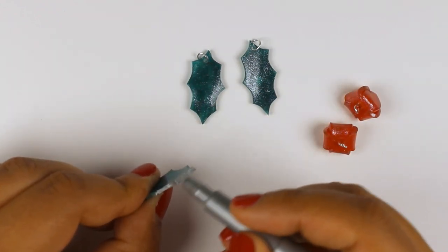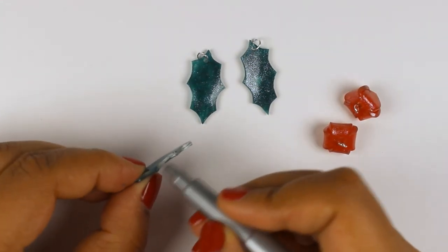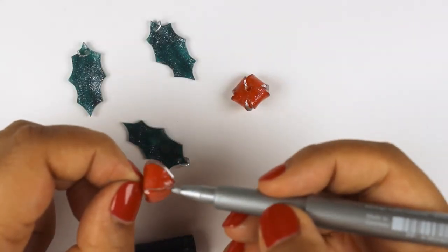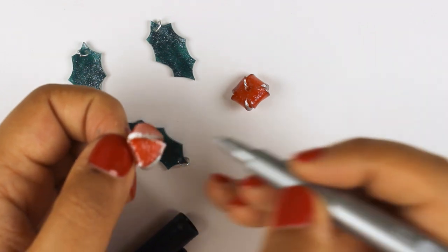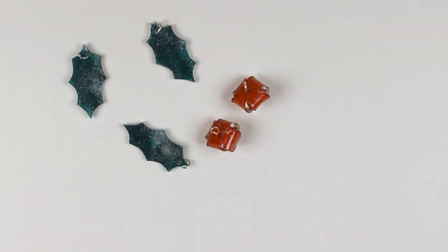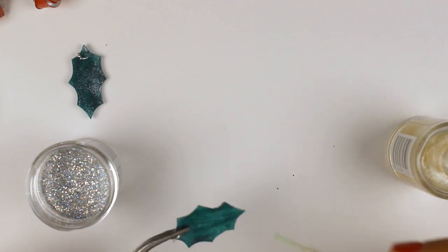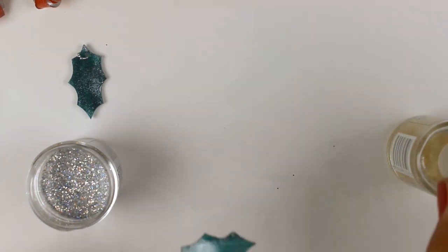To finish off the edges of the shrink film embellishments, I'm adding some permanent metallic marker in silver to both the berries and the leaves. To add some extra bling to make it more Christmassy, I am adding some more nail varnish just to the tips.